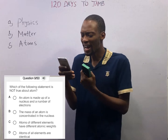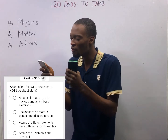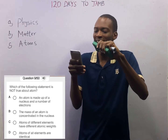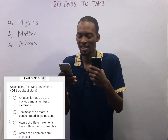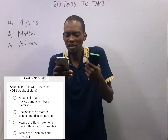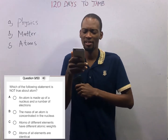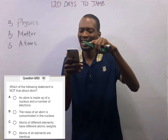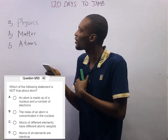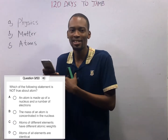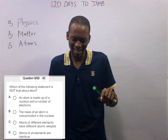A: An atom is made up of a nucleus and a number of electrons. B: The mass of an atom is concentrated in the nucleus. C: Atoms of different elements have different atomic weights. D: Atoms of all elements are identical.